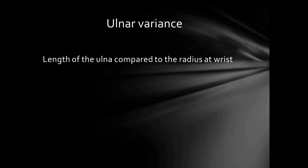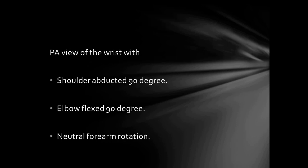Ulnar variance is the length of the ulna compared to the radius at the wrist. To measure it, we take a standard X-ray PA view of the wrist with the shoulder abducted at 90 degrees, elbow flexed at 90 degrees, and neutral forearm rotation.